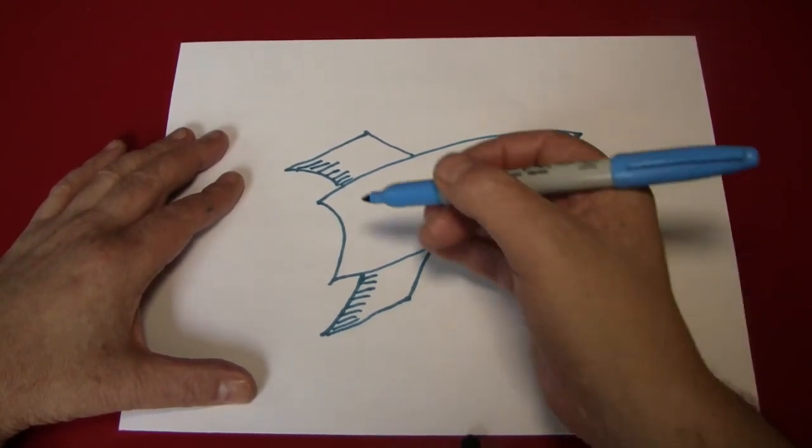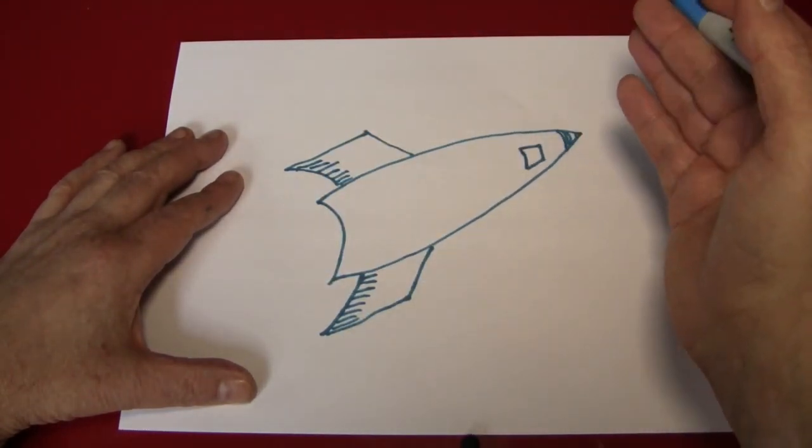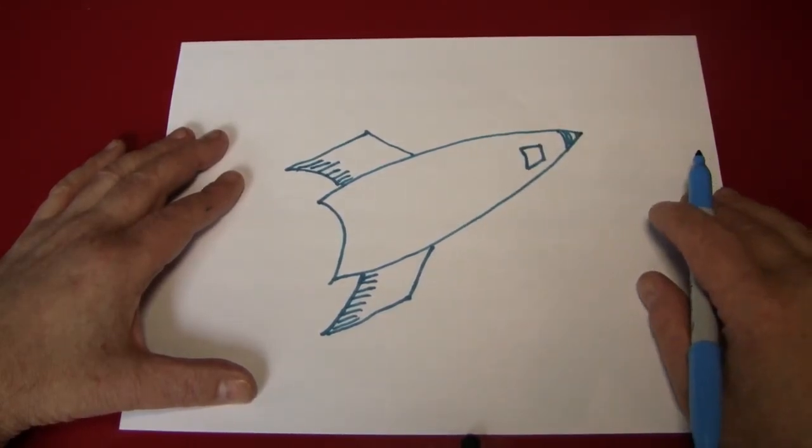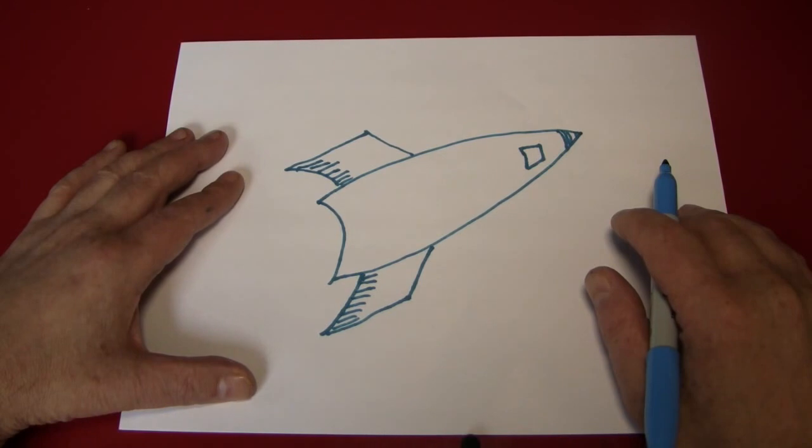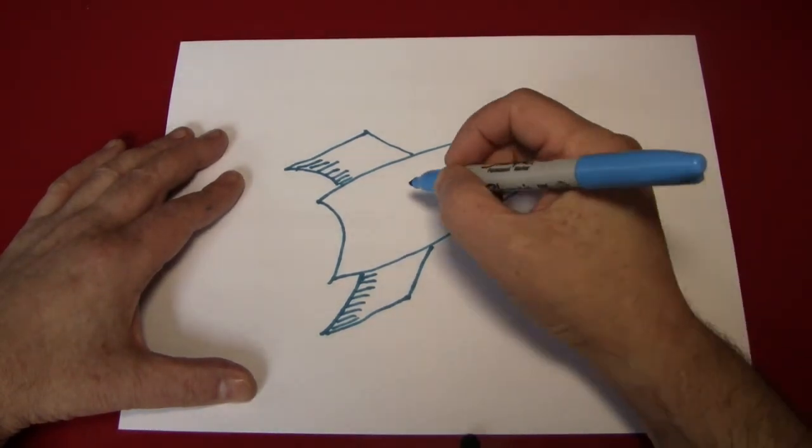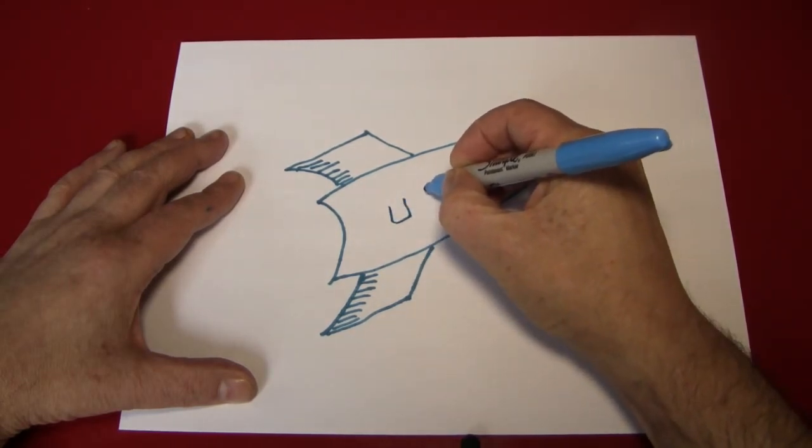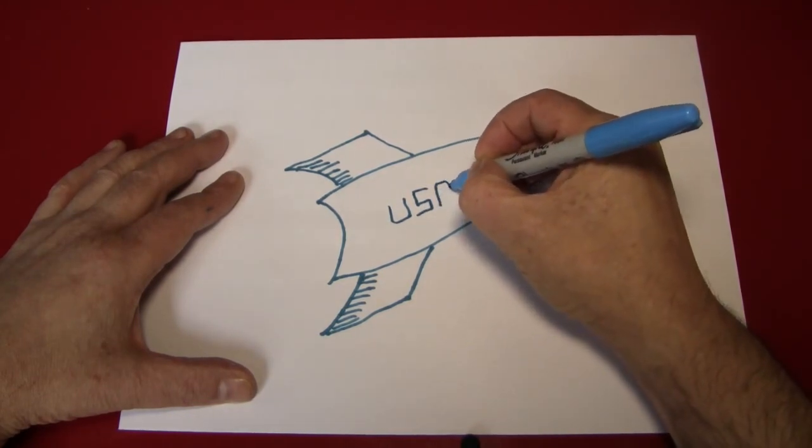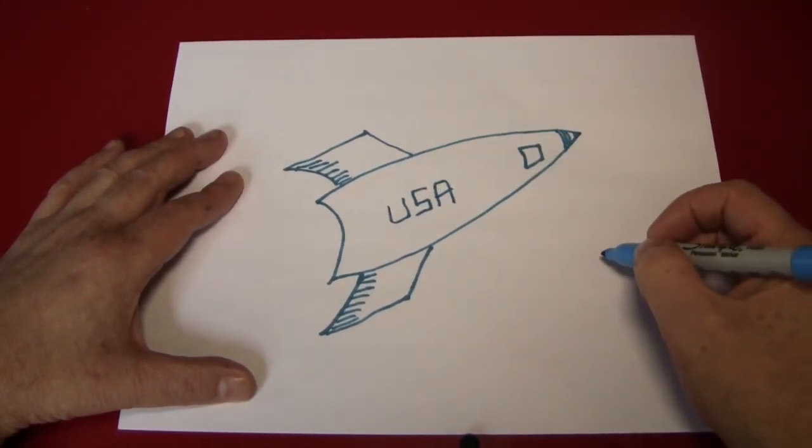Now we can decorate this any way you want. You could draw a bird of prey or whatever symbol represents your country. For my country, it's a bird of prey. But because I can't really draw one that easily, I am going to make, let's say, USA. And a lot of rocket ship toys will have that kind of a marking.